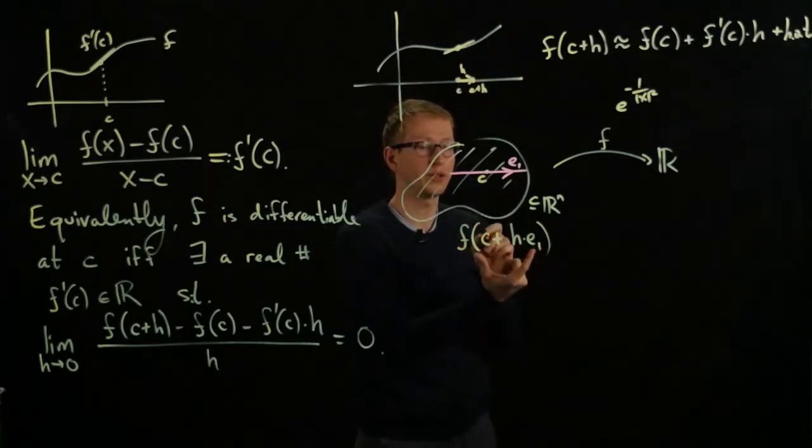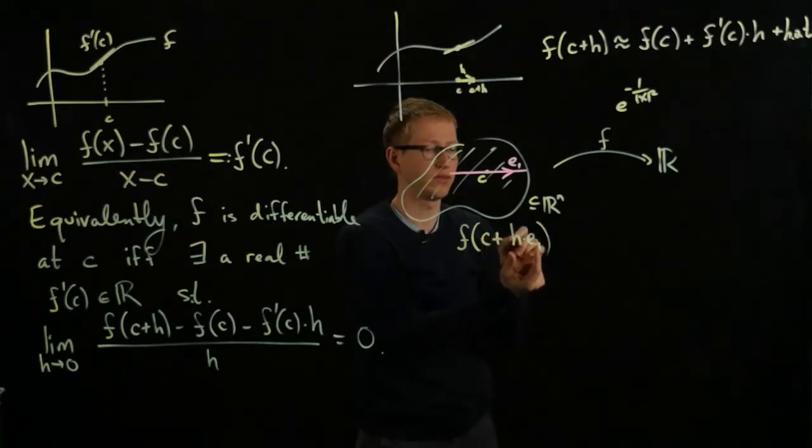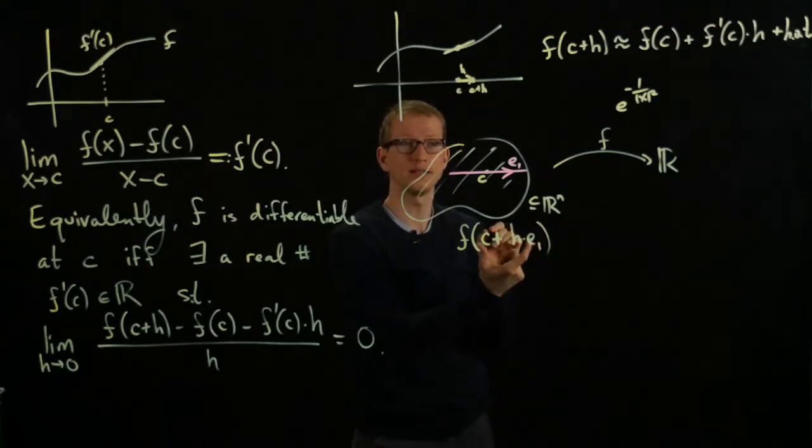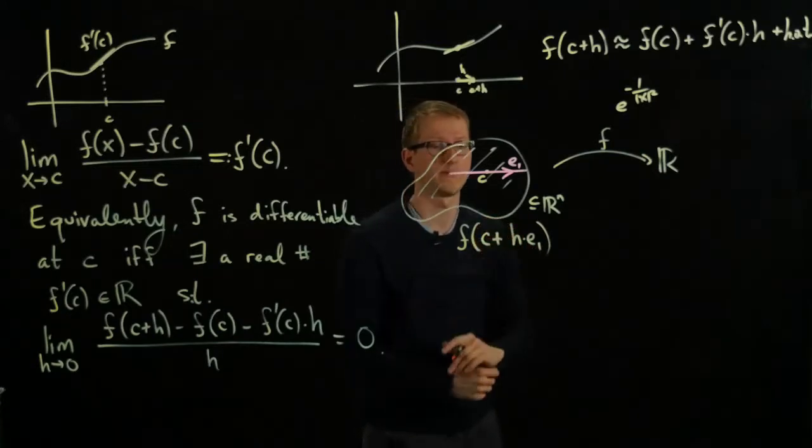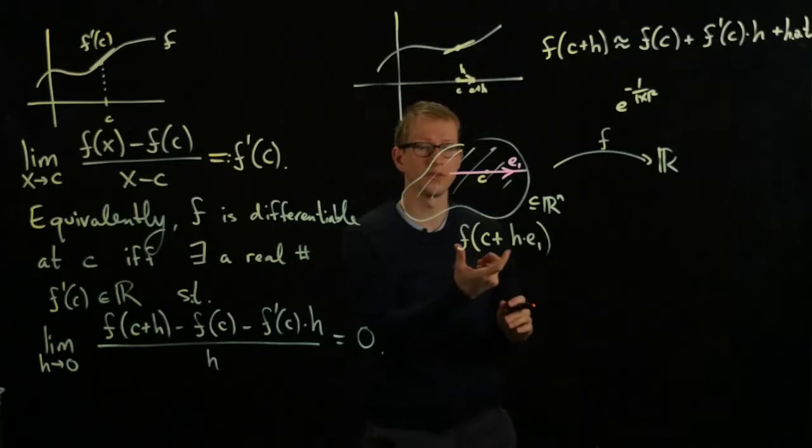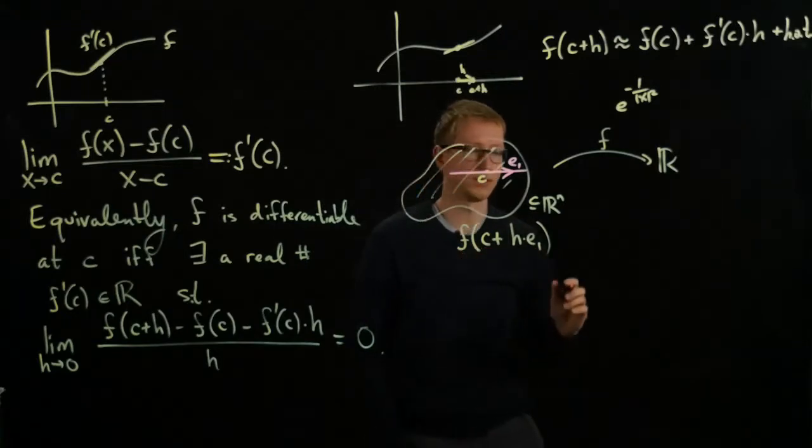Then, we can multiply the unit vector by H, and this quantity, this expression, is still in our domain, as long as H is small enough. So it makes sense to talk about the value of F at this point.